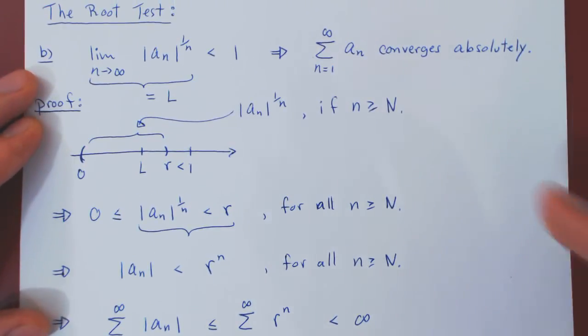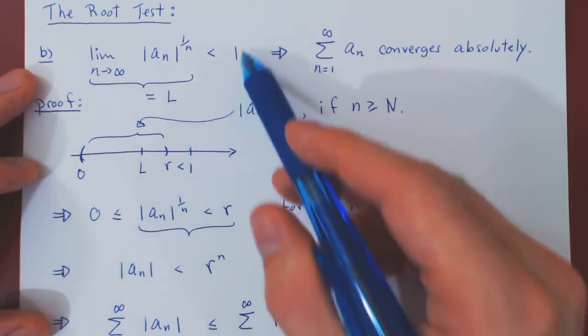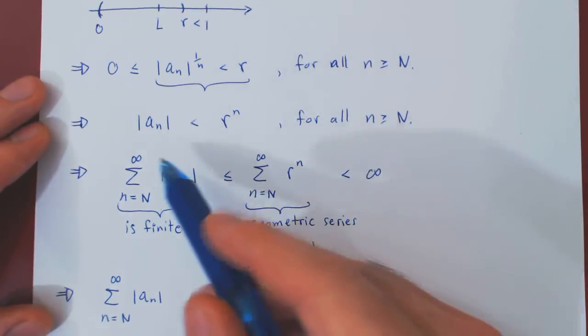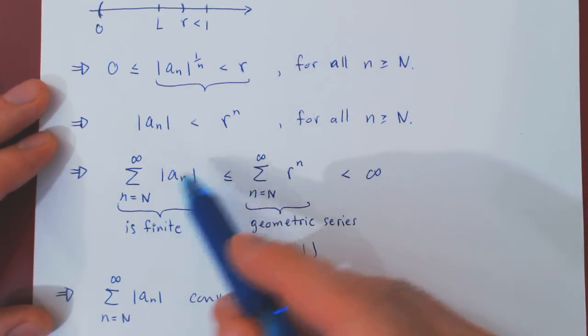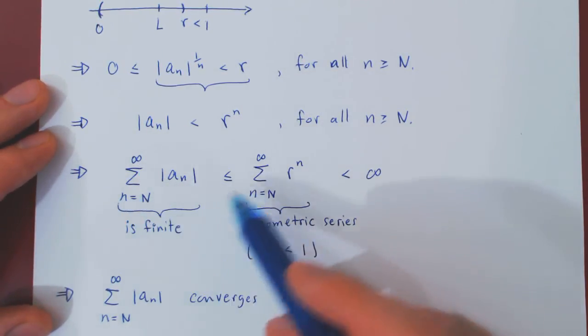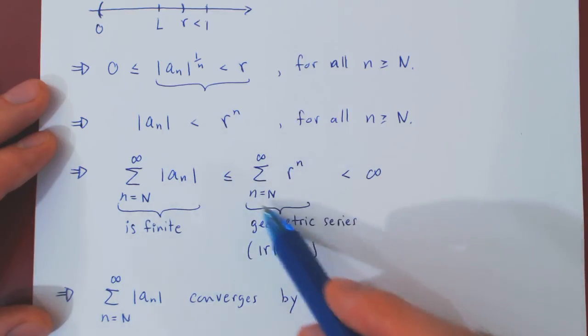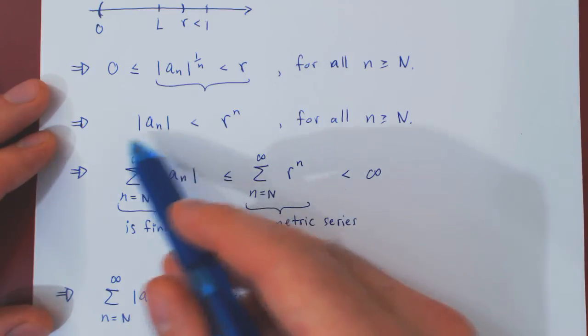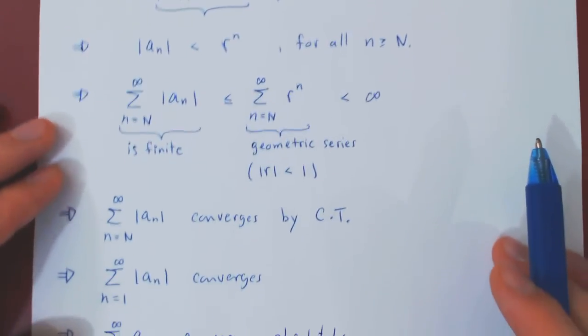And to summarize the proof, what we were able to show is that, because of this inequality, it implies that the series of the terms in absolute value for large enough values of n is at most some converging geometric series. So the sum here must be finite by the comparison test.